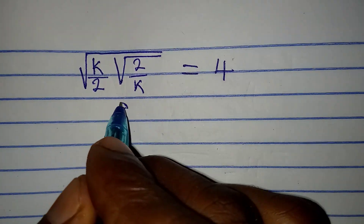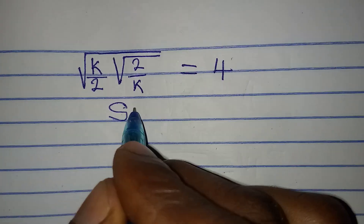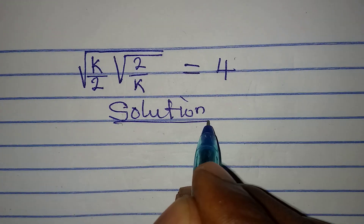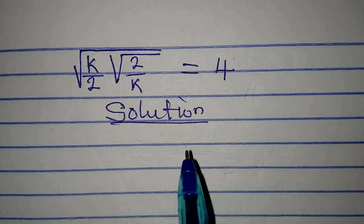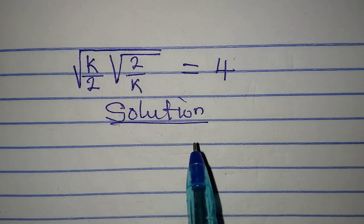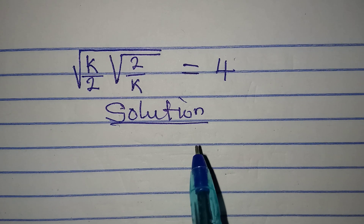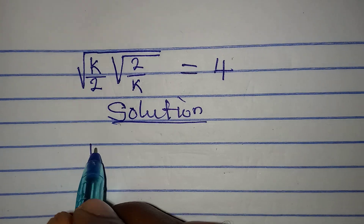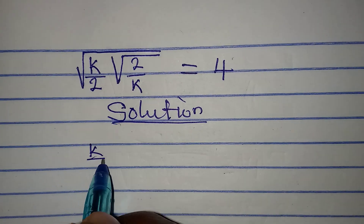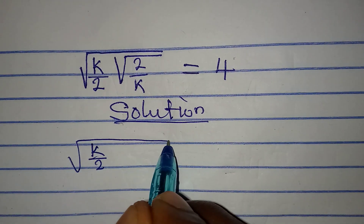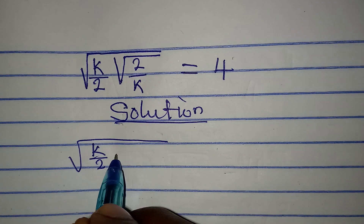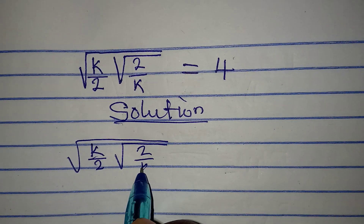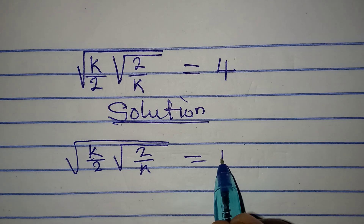Hello everyone. Let's solve this problem very quickly. You're welcome to Cool Mathematics, where we solve problems in detail. Here we have k over 2, square root of k over 2, and then square root of 2 over k, which is equal to 4.